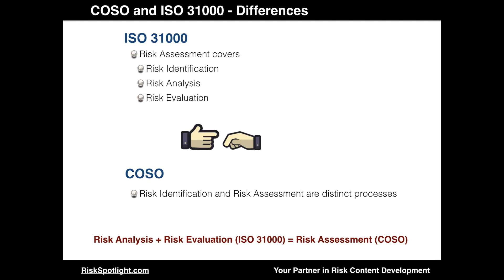The next difference is related to vocabulary. In ISO 31000, risk assessment covers risk identification, risk analysis, and risk evaluation — so risk identification is part of the risk assessment process. While in COSO, risk identification and risk assessment are two distinct processes. So what COSO calls risk assessment would be equal to the risk analysis and risk evaluation processes within ISO 31000.